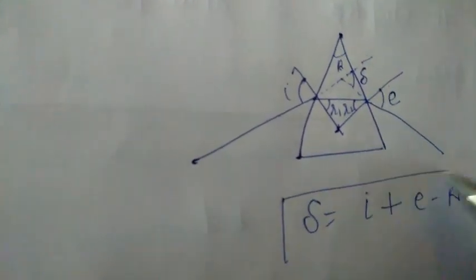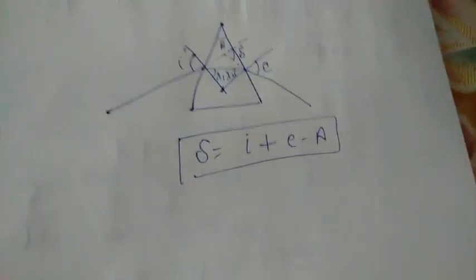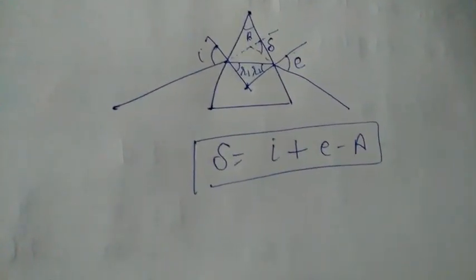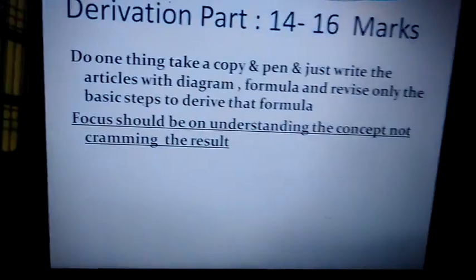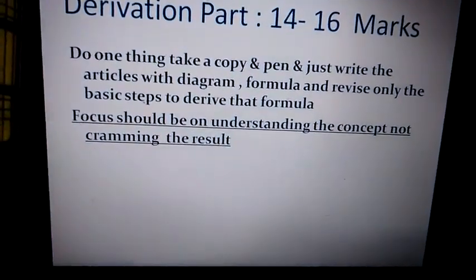Therefore, with the help of this diagram, we can easily derive the formula. That is, angle of deviation is I plus E minus A. So I want to say that if we know the concept, then we can revise or derive any formula. So students, your focus must be on understanding the concept, not cramming the result.